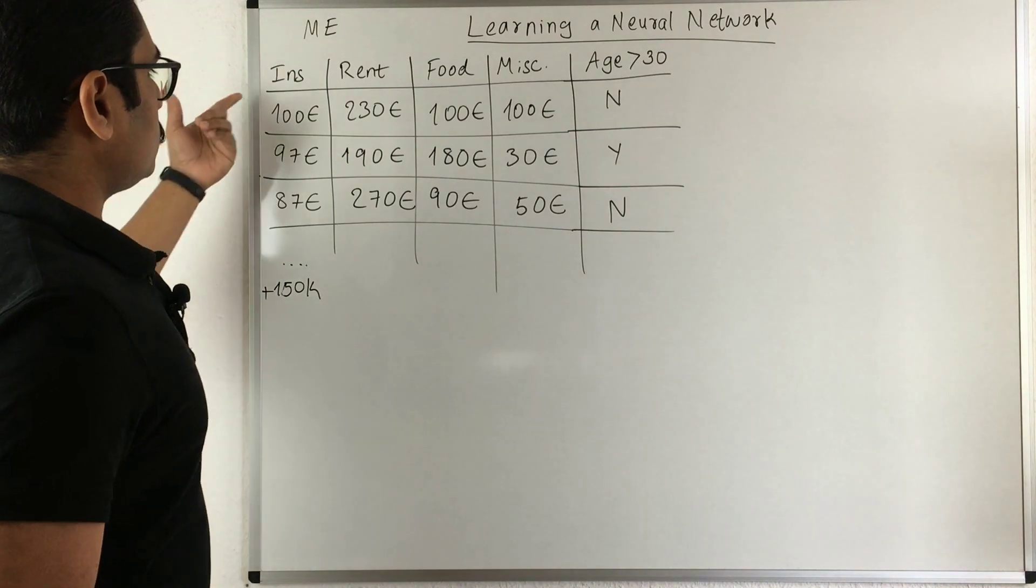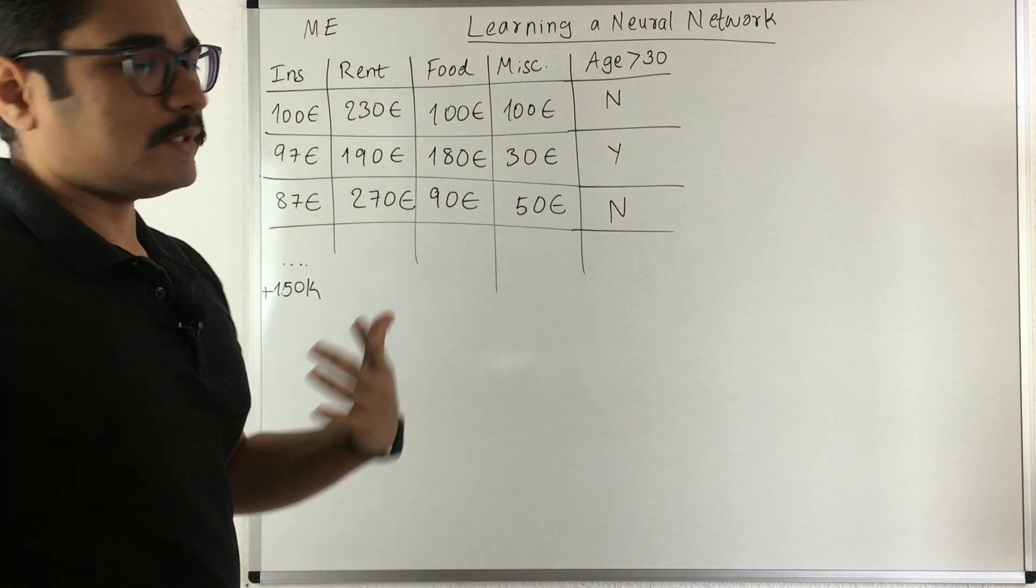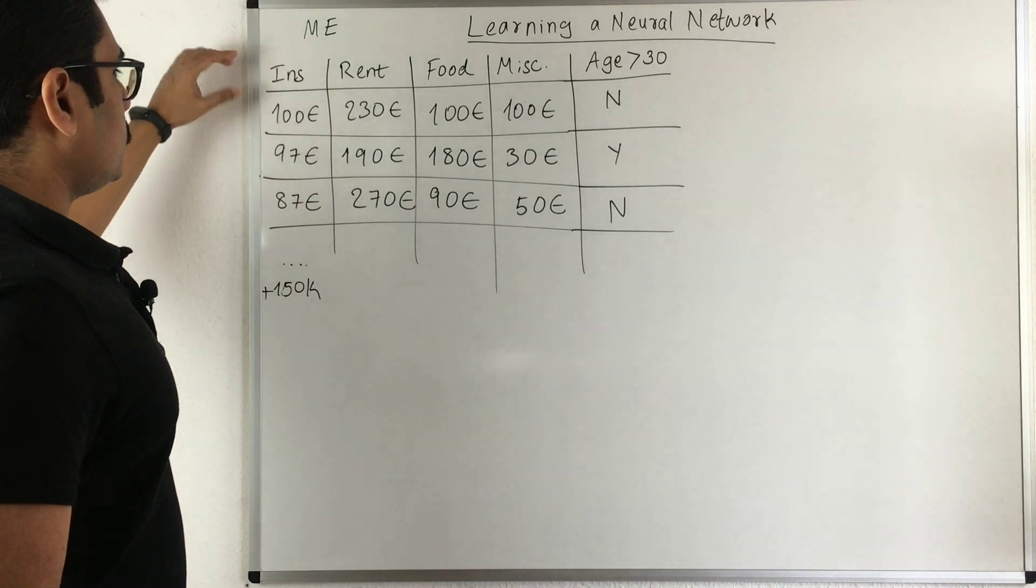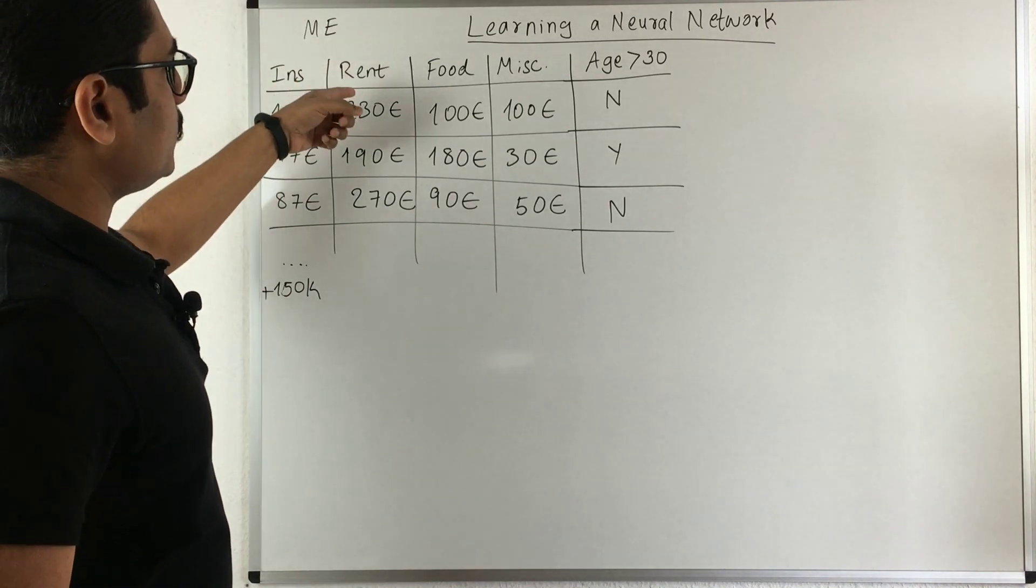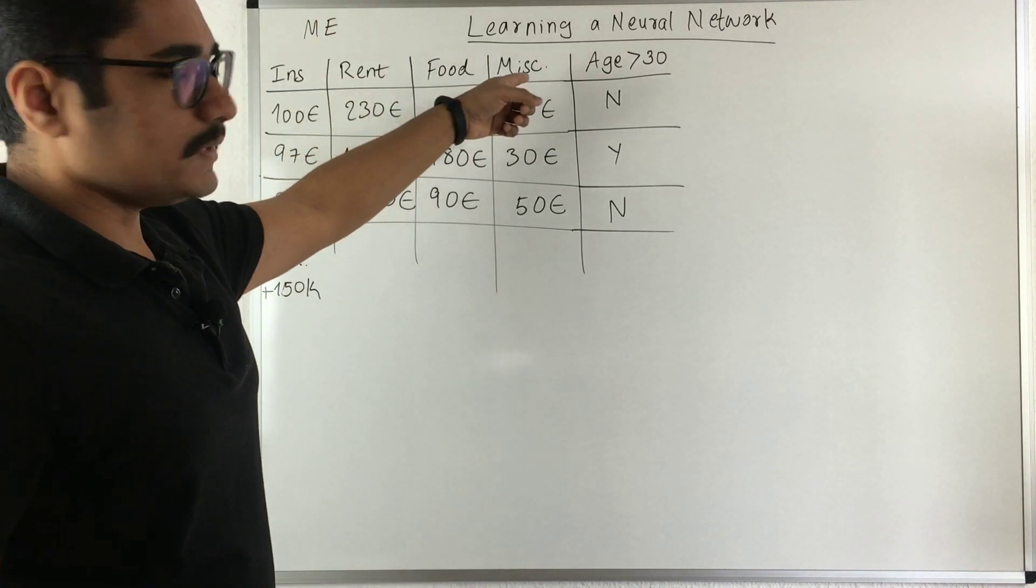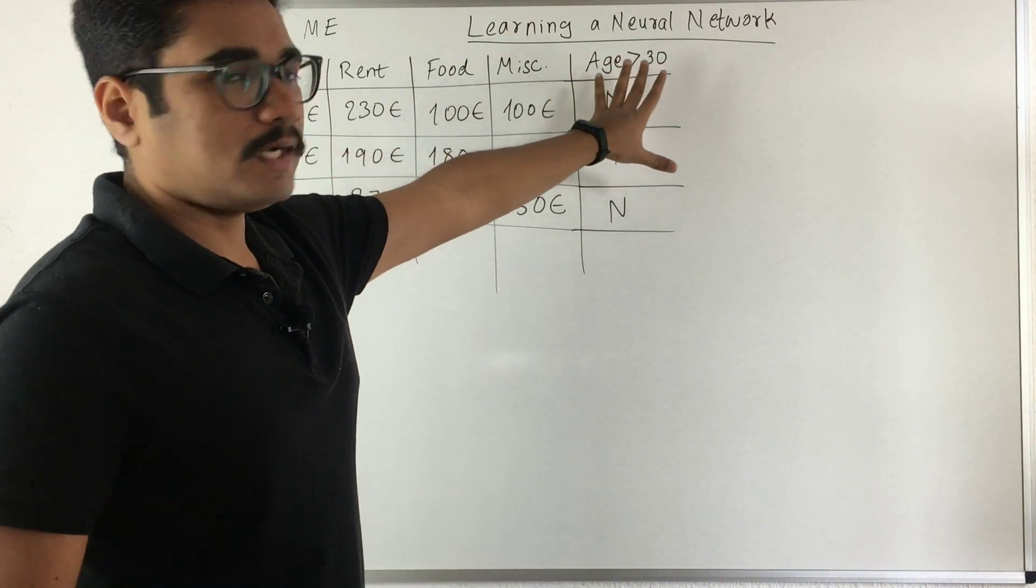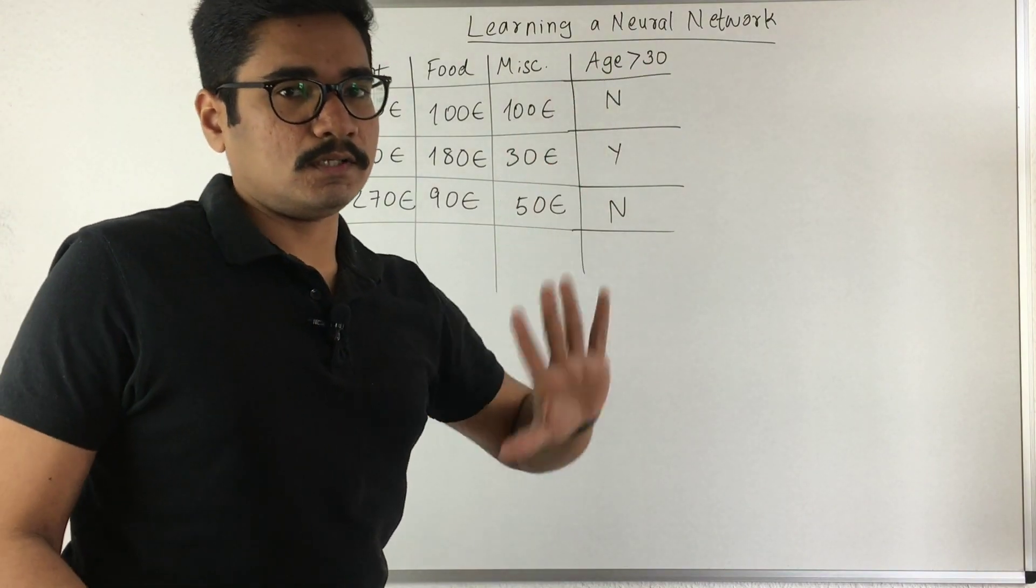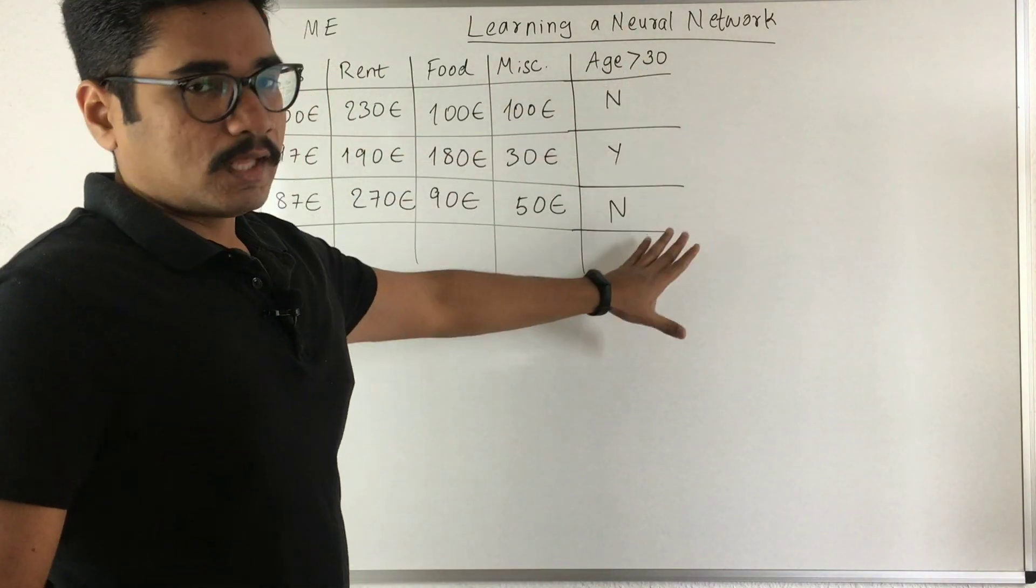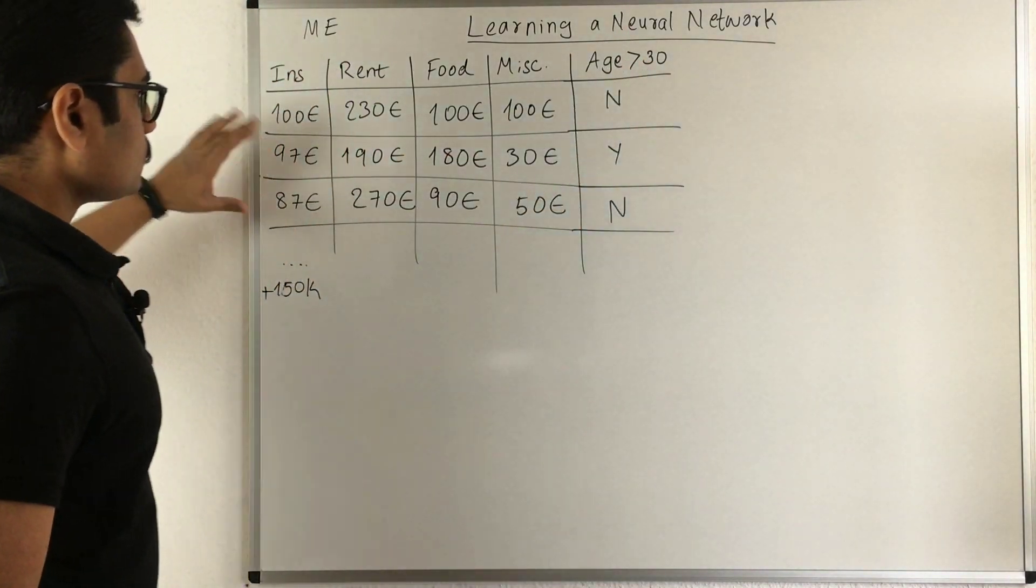If I am a student, a foreign student, I need to pay insurance, then rent, then for food, then for miscellaneous. And then you have a final class that is a target attribute: age greater than 30 or not. So this is the class that we are going to predict.